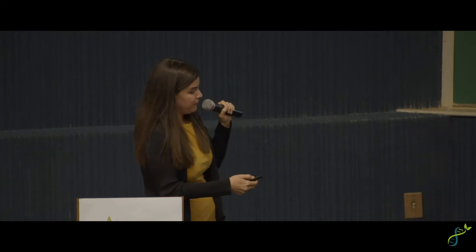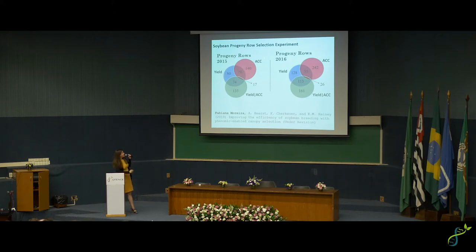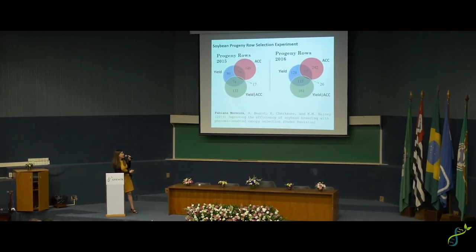I usually have about 5,000 to 6,000 progeny rows. Three selection criteria were developed in 2015 and 2016: the average canopy coverage, yield from the combine on single rows about three meters long, and yield with average canopy coverage as a covariate — adjusting yield data to a constant canopy coverage.